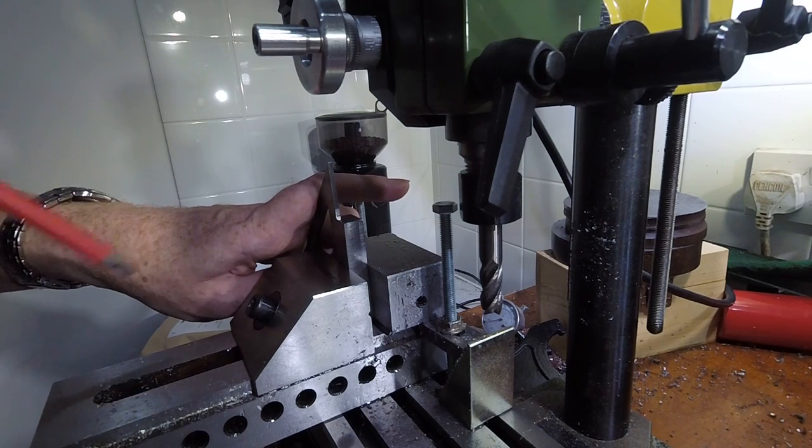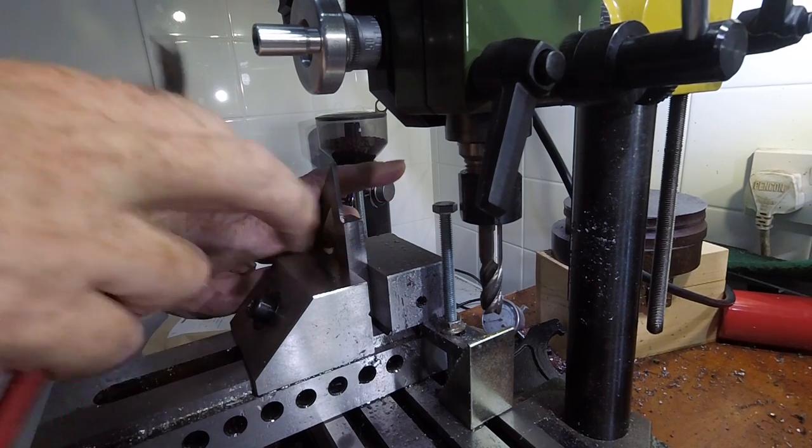Holding the part this way leaves a lot more protruding from the vise jaws, making it much more vulnerable to chatter and flexing.